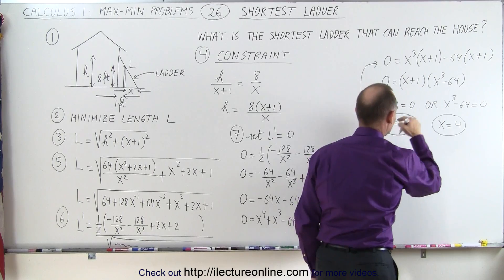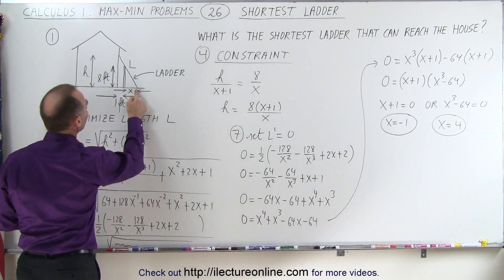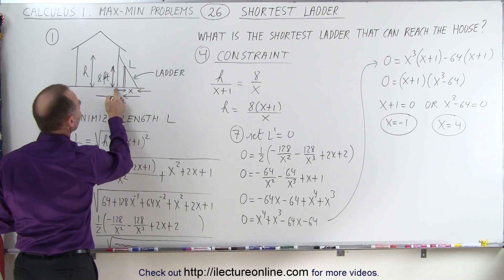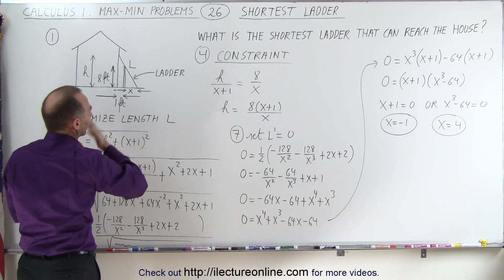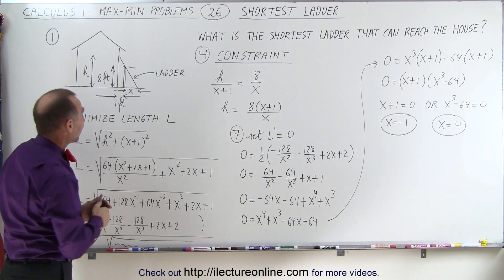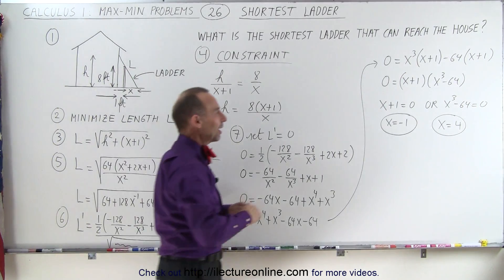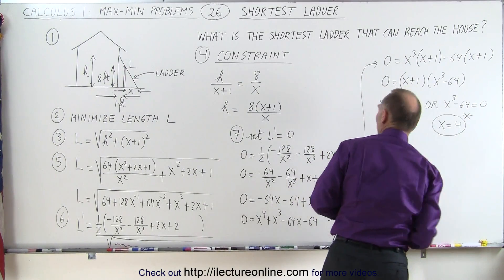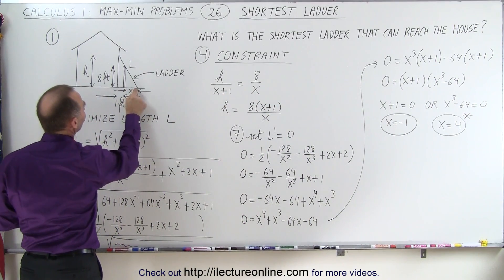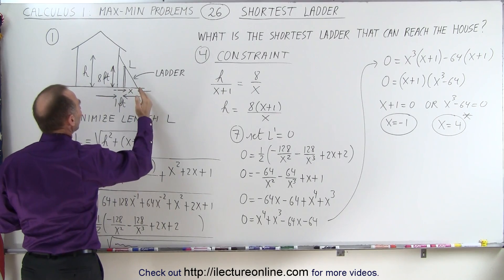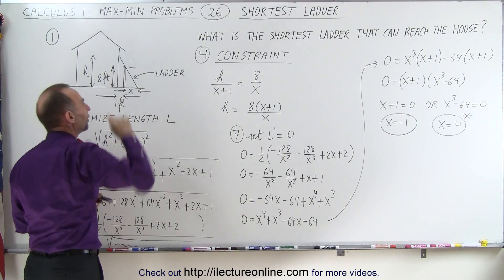Let's evaluate our two possible solutions. x = −1 would put the bottom of the ladder right up against the house, making the ladder infinitely long or zero length — definitely you couldn't clear the wall. So the only valid option is x = 4, which puts the base of the ladder at 5 feet away from the house, allowing us to clear the wall and reach the house with a minimum length ladder.